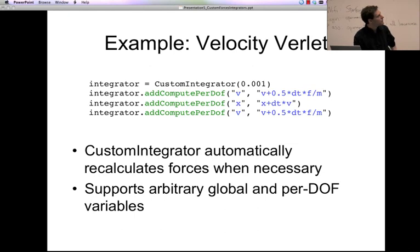There are actually some interesting things to notice about this. The first and third steps look completely identical, except that the force that appears here is not the same as the force that appears here. Because in between, your positions have gotten updated, and so your forces will have changed. You don't need to tell it that. It's smart enough. It'll figure that out. It will say, oh, you just changed your positions. I know that this means that the forces could have changed. Therefore, when I see an F here, I know that I need to recalculate it. So you don't need to worry about that. It just takes care of it all for you. So you can have arbitrary variables that appear in here, both global variables and per degree of freedom variables. We have a few of them. There are a bunch of standard ones that are built in. So like V is velocity, X is position, F is force, M is mass, et cetera. But you can also define arbitrary other variables that you want and make use of them in your algorithm. So any questions on that?